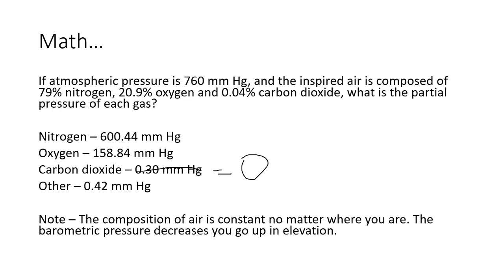Now the way that we calculated each of these, so nitrogen, for example, we just went 760 times 0.79. I really need to get an apple pencil here. And that gets us to 600.44. And we did the 760 times 20.9 to get the 158, and so on and so forth. But I want you to remember that it doesn't matter where you're at on Earth.